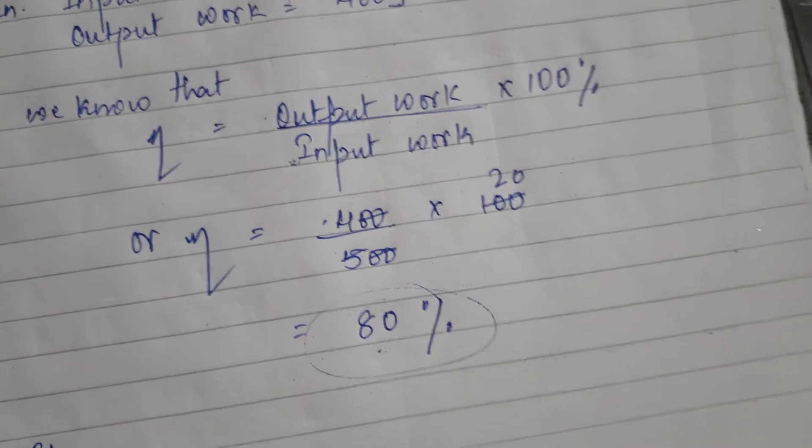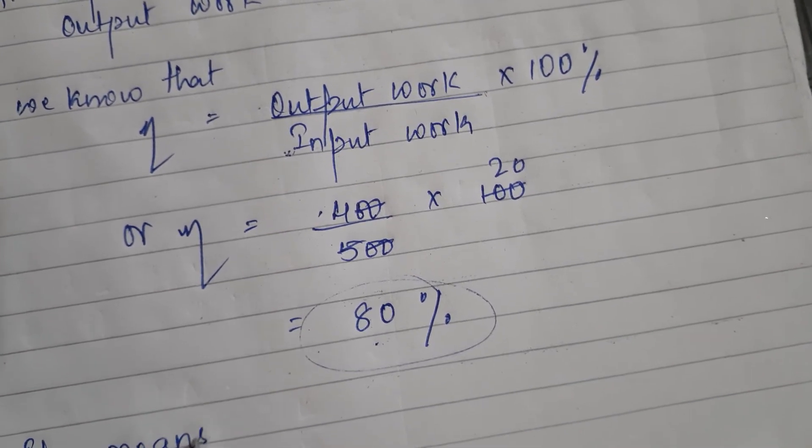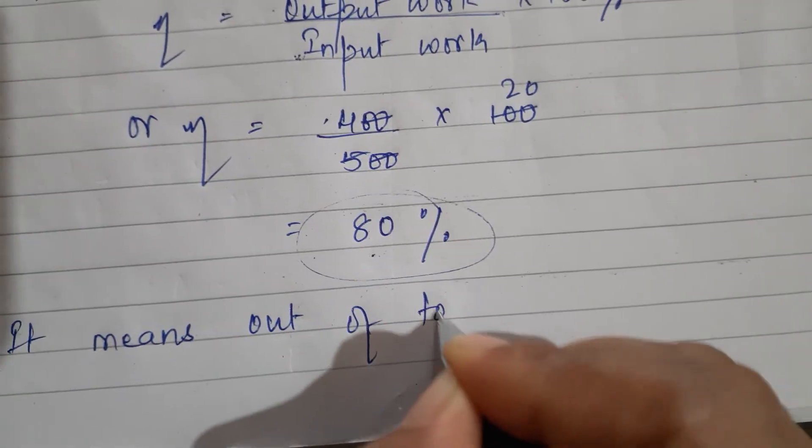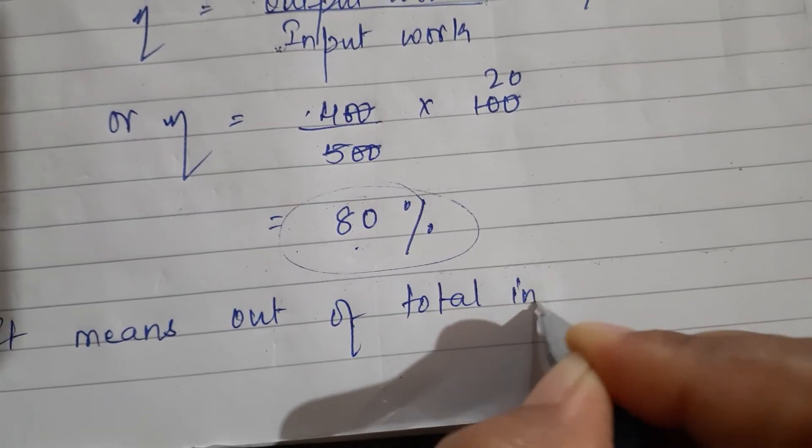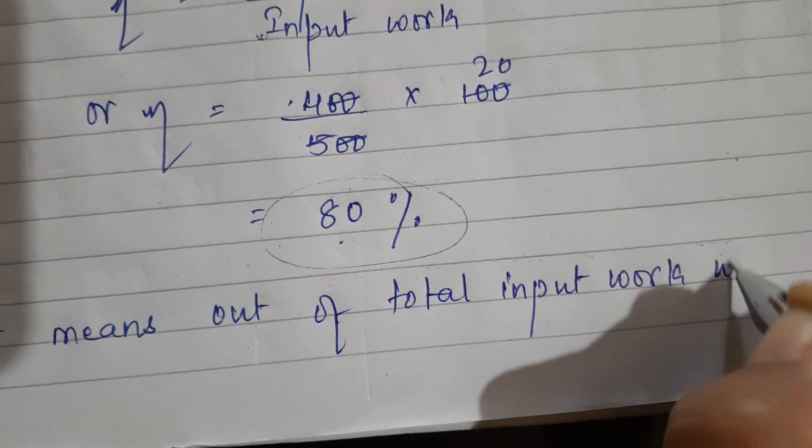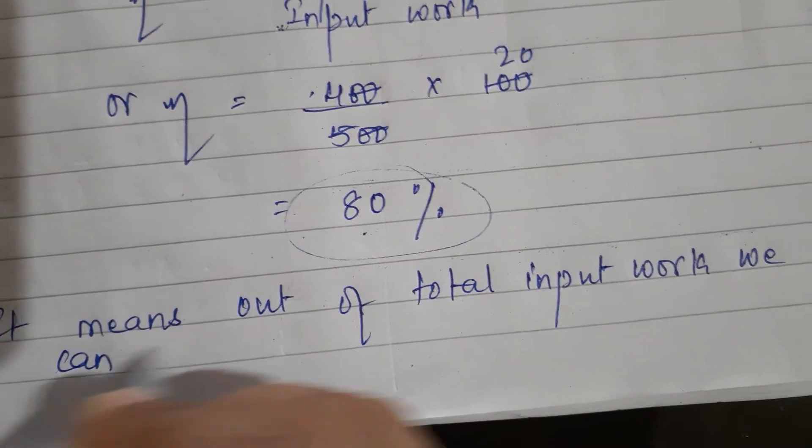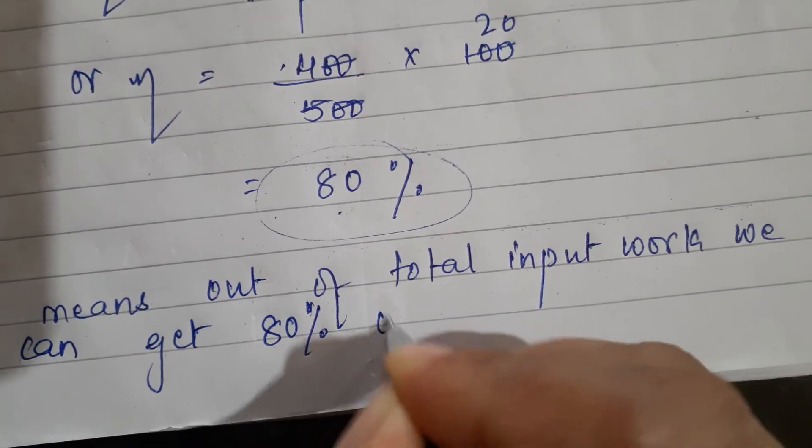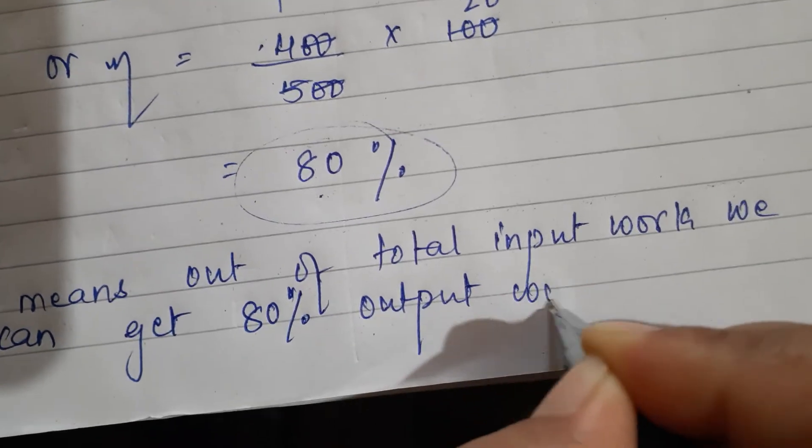It means out of total input work we can get 80% output work from the machine.